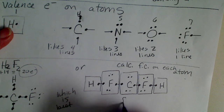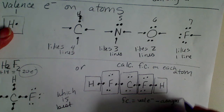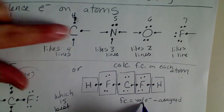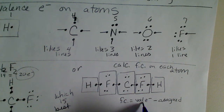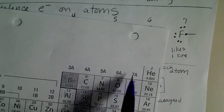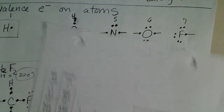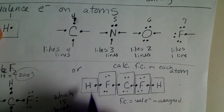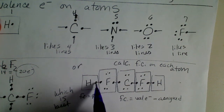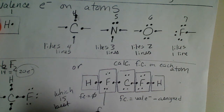We really only need to calculate three unique atoms since some are in the same environment. The formal charge equals valence electrons minus assigned electrons. From the periodic table: carbon is group four, nitrogen five, oxygen six, fluorine seven, and hydrogen is group one with one valence electron. The formal charge on hydrogen equals zero, which always has to be the case because hydrogen can only have a single bond to it.